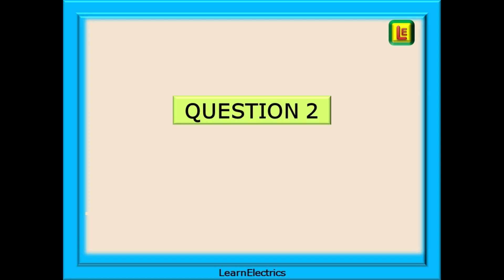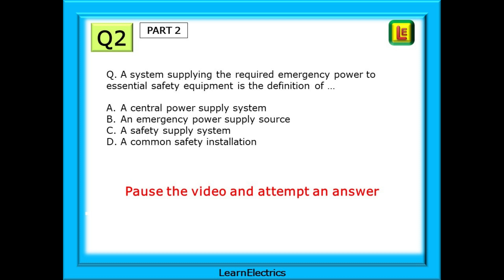Question 2 next and this answer will be in part 2 of the book. In the exam though you will not be given this information. A system supplying the required emergency power to essential safety equipment is the definition of what?